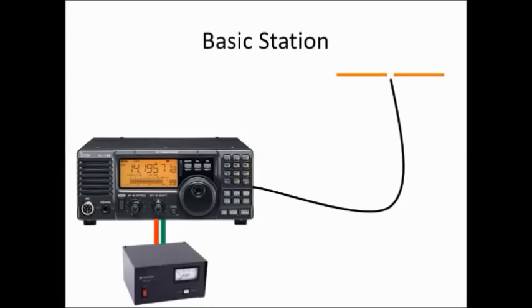Traditionally we think of a base station setup, or a radio station, to be a power supply, a radio, coax cable, and an antenna. And if the antenna is cut to the proper length to match the operating frequency of the radio, it should be very efficient and operate without any problems.